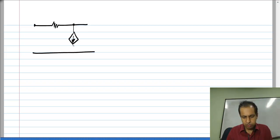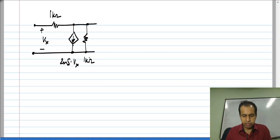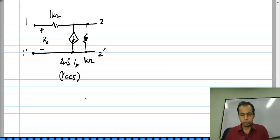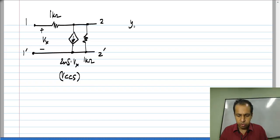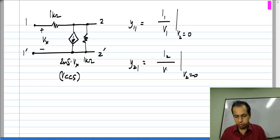Now let us take another example, this time using a controlled source. Let me define this as vx, and this is 2 milli Siemens times vx — a voltage-controlled current source. This is port 1 and this is port 2. We determine the y-parameters using exactly the same algorithm as before: for y11, short port 2 and find the ratio of i1 to v1; for y21, also short port 2 and find the ratio of i2 to v1.